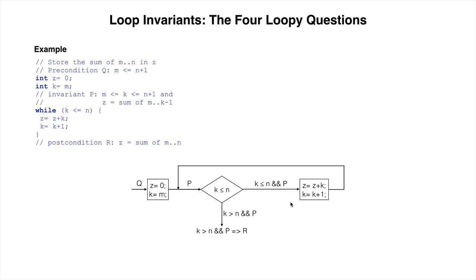There are three pieces of code: the initialization, the loop condition, and the repetend, or loop body. We look carefully at each one, coming up with four loopy questions that are inspired by this flowchart. We will answer each question in a future video.